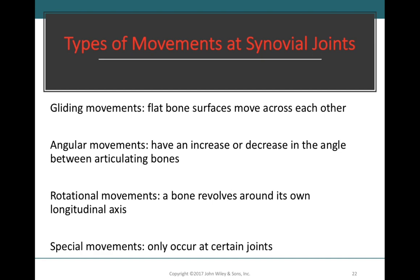Rotational movements refer to any type of movement where a bone is rotating along its longitudinal axis — the axis drawn through the length of the bone — and our bone will rotate around that axis.